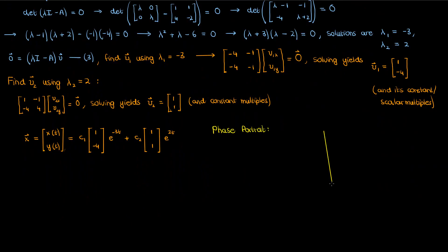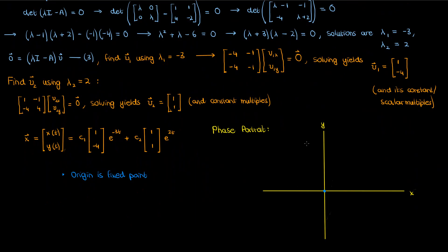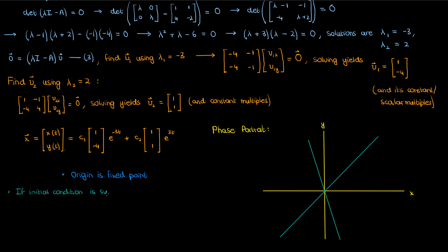Let's now draw the phase portrait. We start by marking the fixed point at the origin, where the derivative is zero. Next, we draw two lines through the origin in the directions of the eigenvectors: one in the direction of (1, −4) and one in the direction of (1, 1). If c2 = 0, the solution lies along the first eigenvector direction and converges in a straight line towards the origin. This eigenvector represents the stable manifold — starting anywhere on it, trajectories stably approach the fixed point.